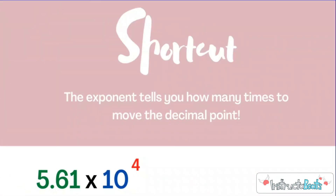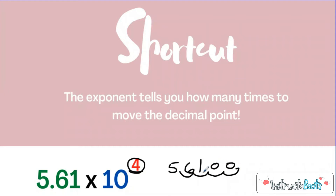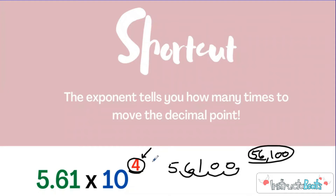Our first shortcut is the same as last lesson: the exponent tells you how many times to move the decimal point. Here, this is a positive four, so we're going to be making this number bigger — moving over four place values. With the significant digits, written in standard form using a comma, this number from scientific notation turns into 56,100. Very easy to do when you're using the shortcut of looking at the exponent. That was our shortcut from last lesson.